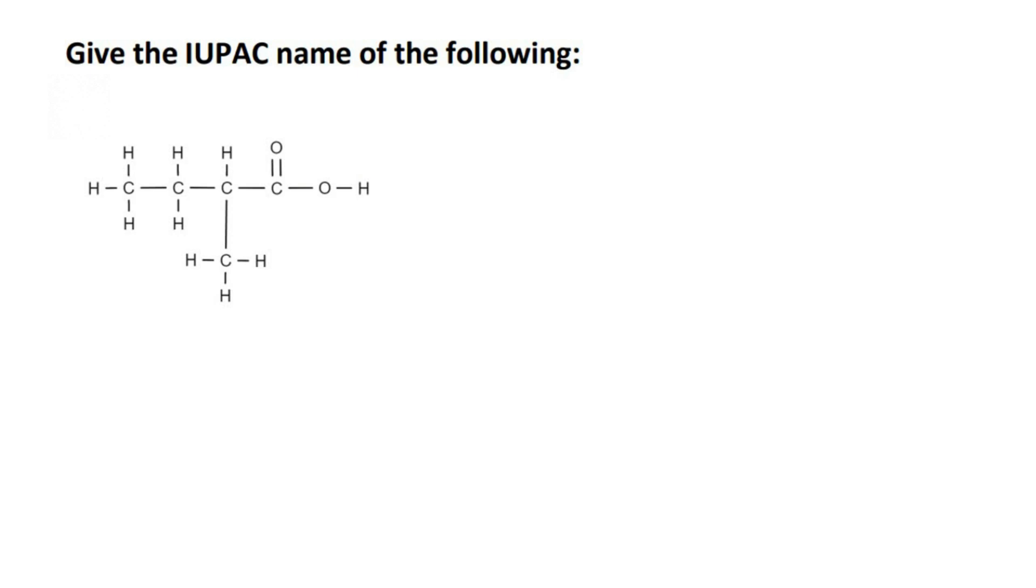So here we need to come up with the IUPAC name. The first step is to make sure we see the longest carbon chain. That would be one, two, three, four. So four means but.